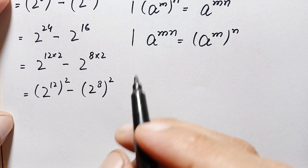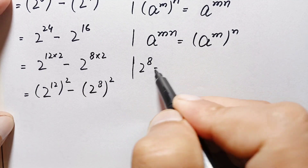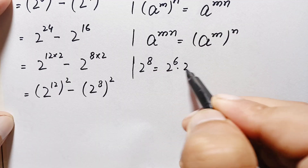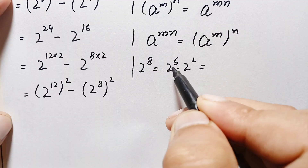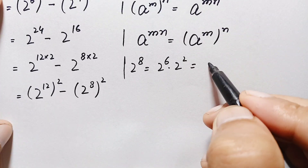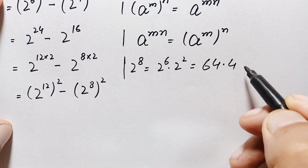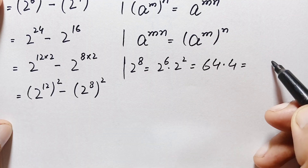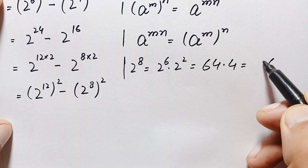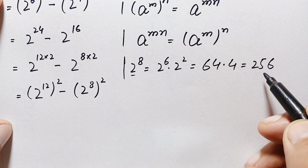Now we find the value of 2 raised to power 8. We write 2 raised to power 8 as 2 raised to power 6 times 2 raised to power 2. Now 2 raised to power 6 is 64, so this becomes 64 times 4. Multiplying: 4 times 4 is 16, carry 1; 6 times 4 is 24 plus 1 is 25. So the value of 2 raised to power 8 is 256.